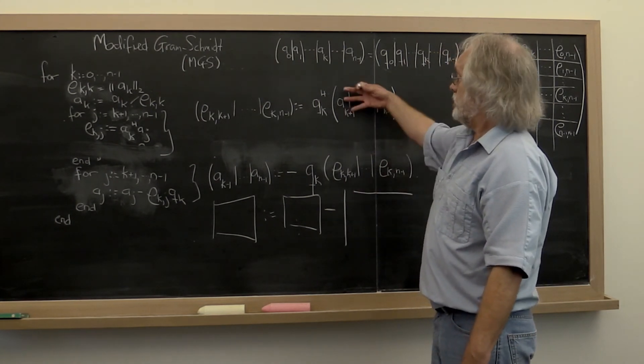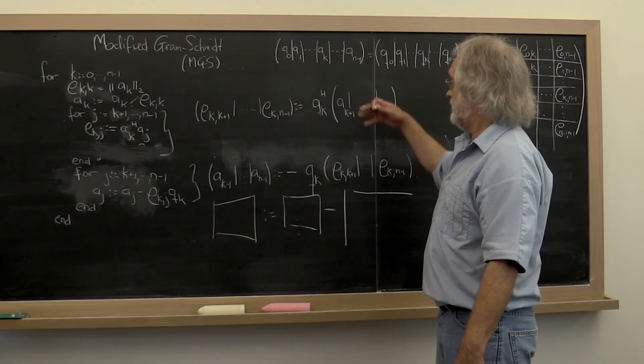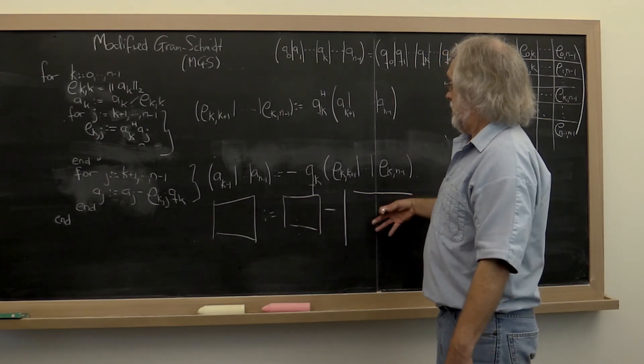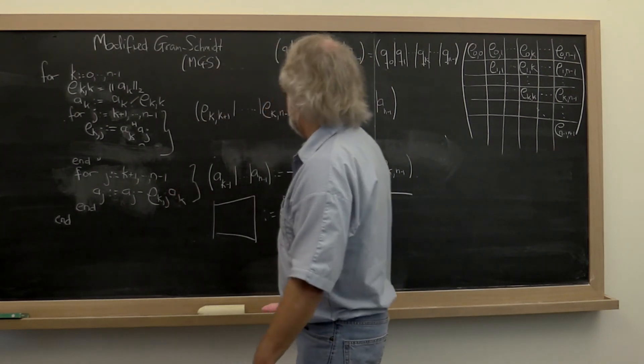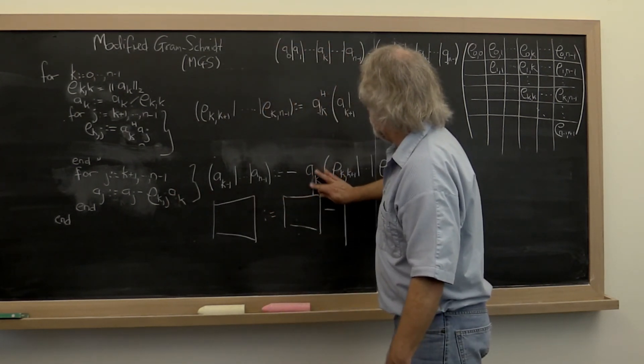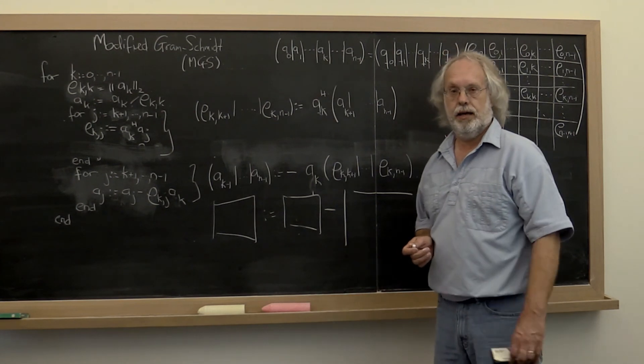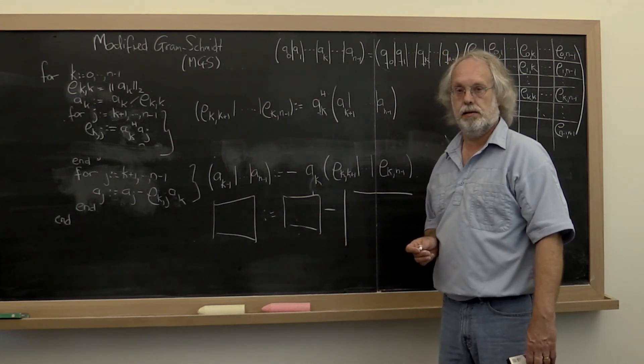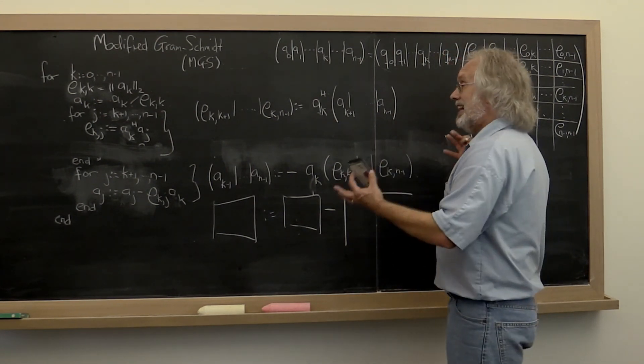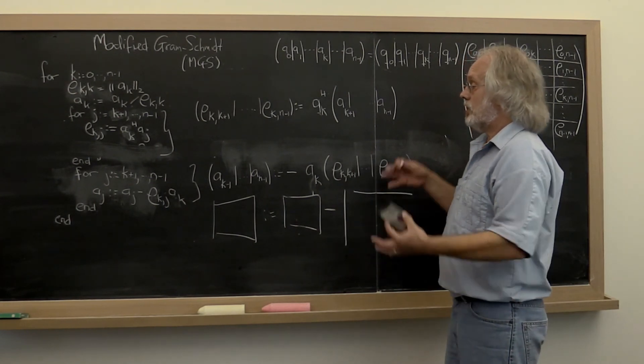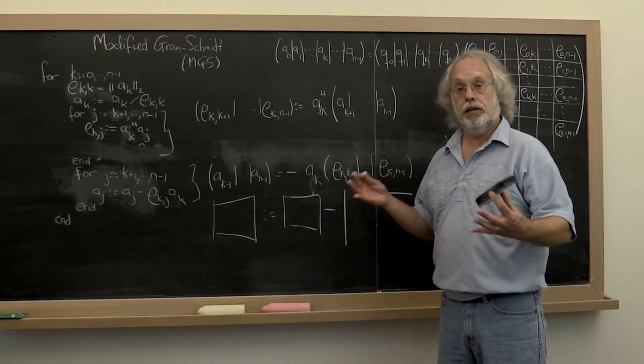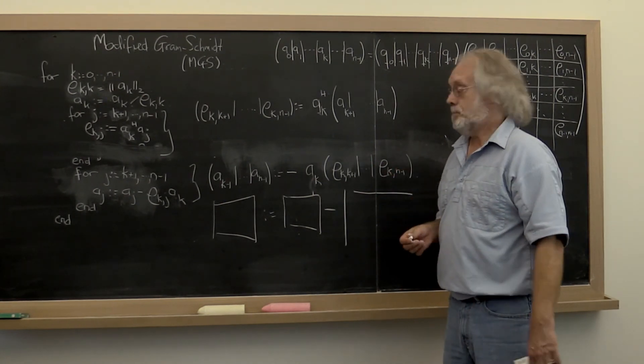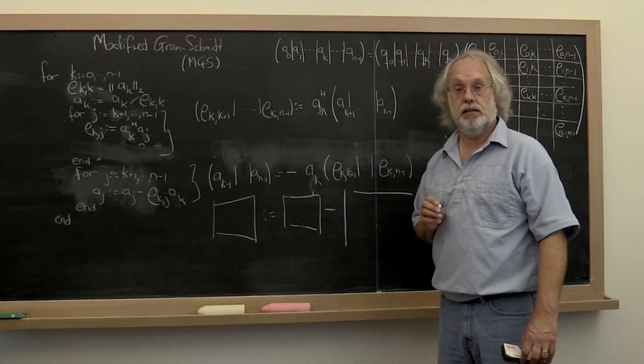So now we can formulate this whole thing as a row times a matrix multiply followed by a rank 1 update. And strictly speaking, I probably should have called this A K because remember Q K overwrote A K. And once we have that we can actually nicely formulate the algorithm again using our FLAME notation without exposing all of these nasty indices.